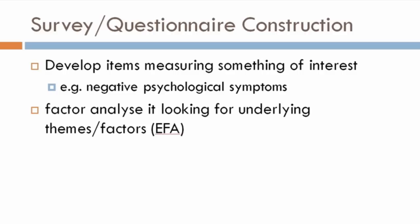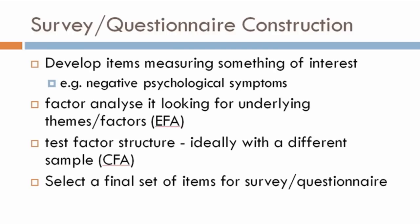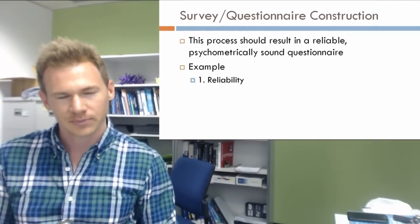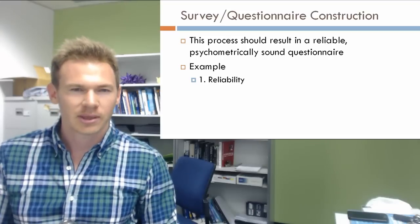The first thing you want to do is initially develop a set of items measuring something of interest. In class last week we spoke about negative psychological symptoms. We conducted a factor analysis looking for underlying themes in this data structure and found a number of underlying themes: stress, anxiety, and depression. We then came up with a factor structure based on the EFA, tested it in the CFA, and ended up with a final set of items to measure those three constructs. The ultimate result of this process should be a psychometrically sound questionnaire — something that is reliable and valid.